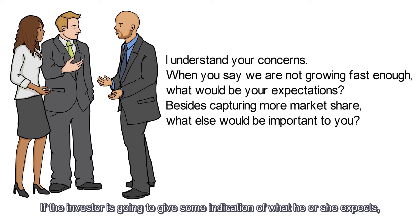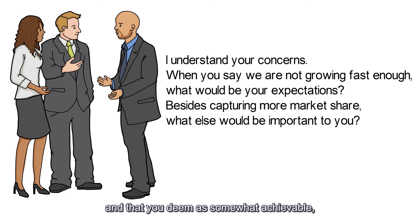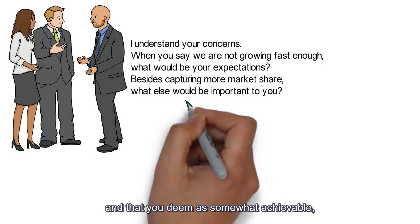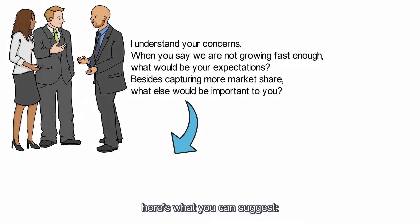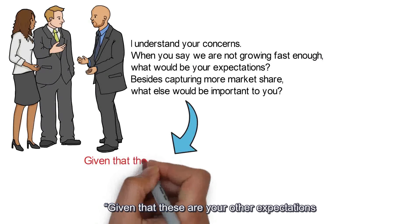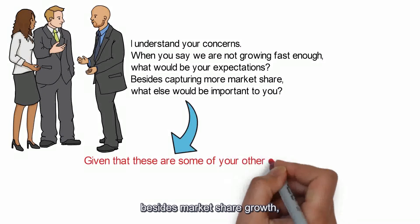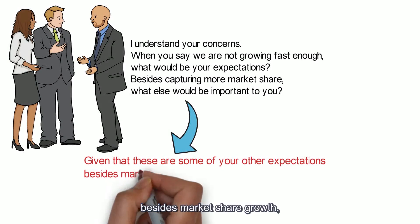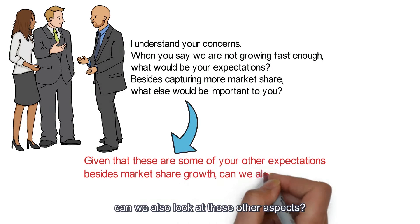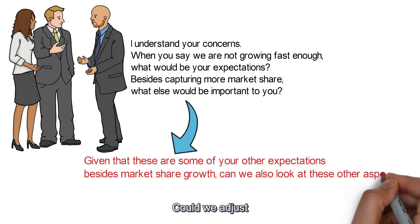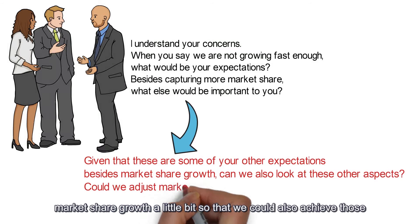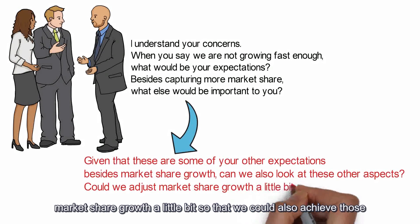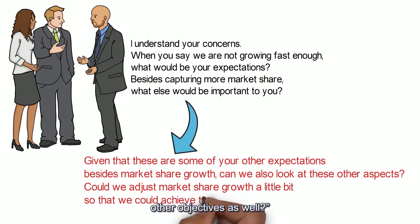If the investor is going to give some indication of what he or she expects and that you deem as somewhat achievable, here's what you can suggest. Given that these are your other expectations besides market share growth, can we also look at these other aspects? Could we adjust market share growth a little bit so that we could also achieve those other objectives as well?